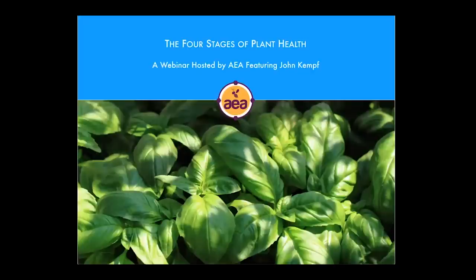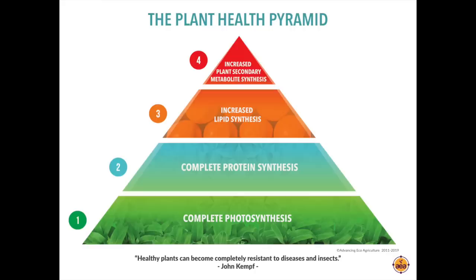We've observed this gradual evolution of plant health where plants become resistant to different types of diseases and different types of insects based on the different physiological processes happening within plants. I developed a diagram called the plant health pyramid to describe the transitions and effects we're observing, and what we can do as growers and farm managers to develop additional levels of plant health.